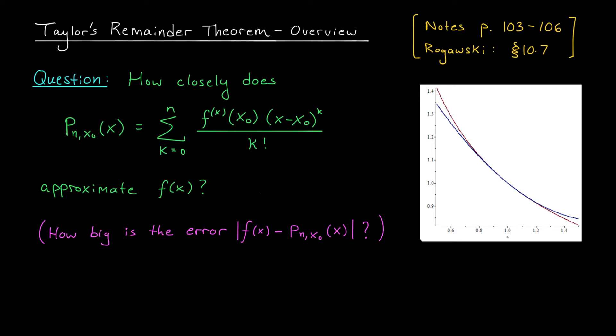But one thing that we haven't yet asked is, how good is this approximation? How close are f and the Taylor polynomial pn x0? That is, how big is this error term — the difference between these two expressions in absolute value? It turns out that quantifying this difference exactly is an incredibly difficult task, because we could be dealing with very complicated functions. So rather than trying to determine the exact value of this error, we're going to settle for an upper bound — some number where we can say the error is definitely less than this. This upper bound will be given to us in the form of a very famous theorem called Taylor's inequality.